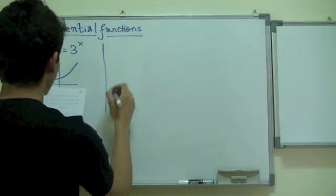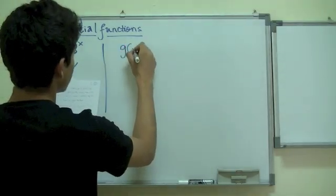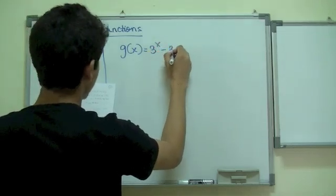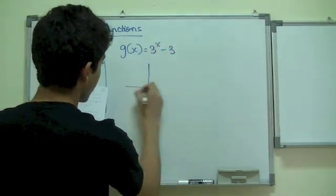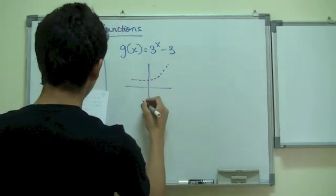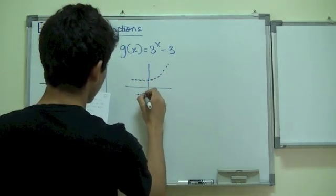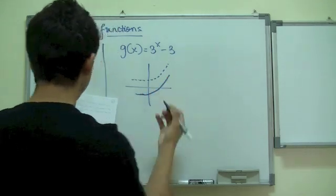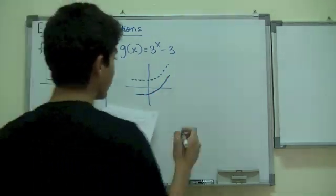Then, you have g(x) is equal to 3^x minus 3. That would be, first the graph was here. Now, it's moved down to units and it would be here.